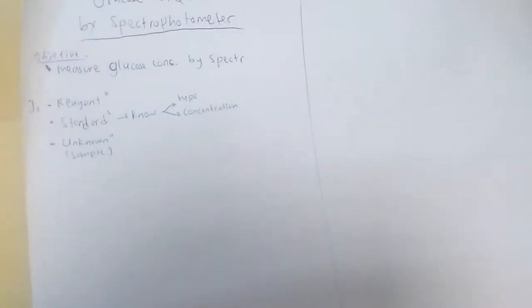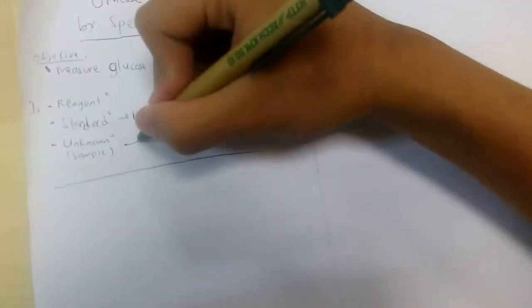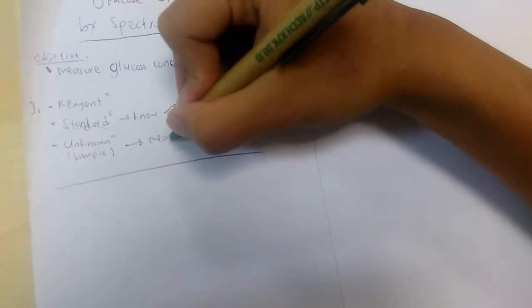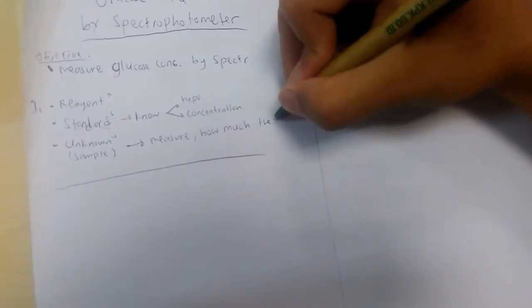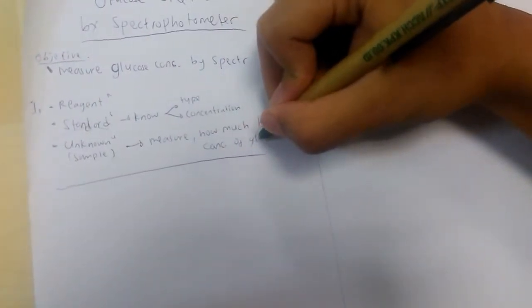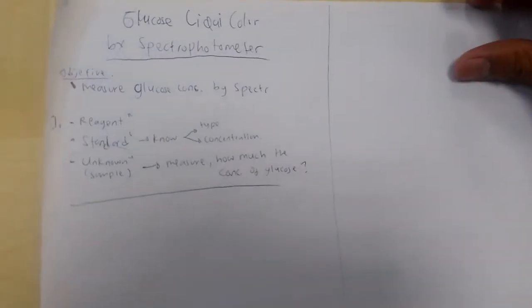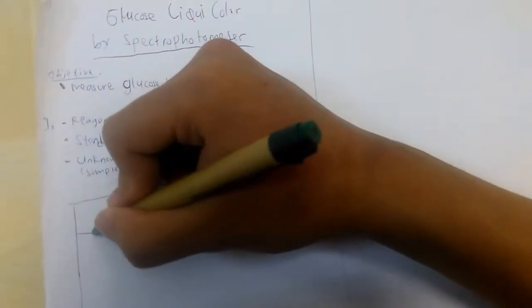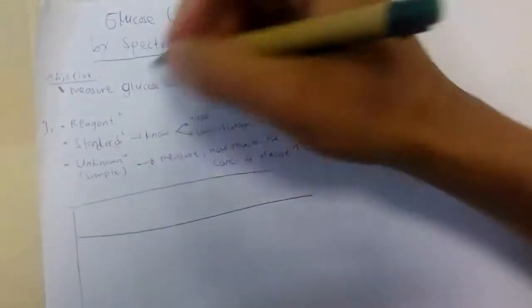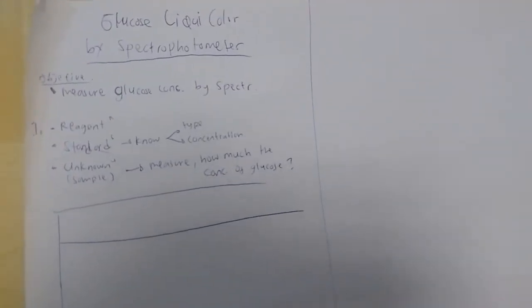We have to know the concentration of the standard because we want to compare it to the samples — the unknown samples. So we have the standard and then the unknown sample. This is what we want to know — how much is the concentration of glucose in the sample? That's the question we want to answer.